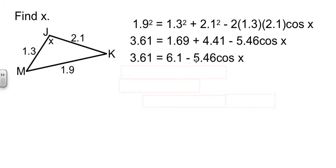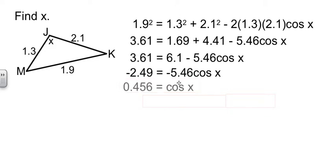They try to subtract these two numbers, 6.1 minus 5.46. You can't do that. This has another thing attached to it, so these are not like terms. The trick is you have to subtract the 6.1 over to the other side. Then divide by the negative 5.46.